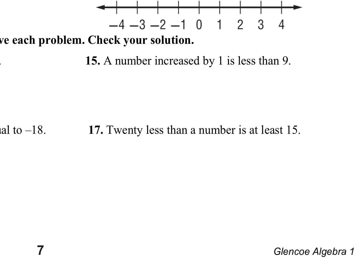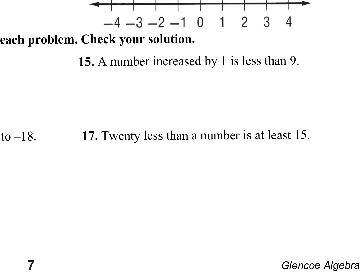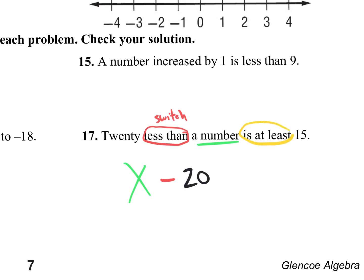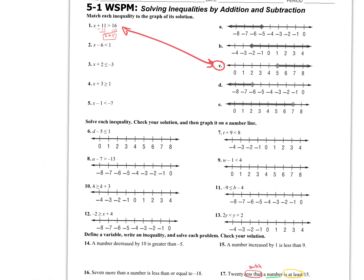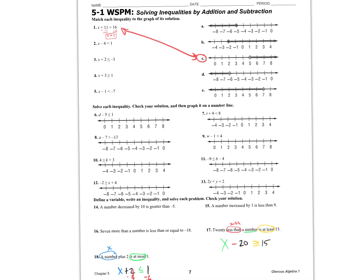When they say 'less than,' it implies subtraction and a switch in order — '1 less than your age' is your age minus 1, not 1 minus your age. So 20 goes on one side and the variable x on the other. 'Is at least' means greater than or equal to. This entire worksheet is straightforward. Please check your answers on Google Classroom — this video will be uploaded there later today.